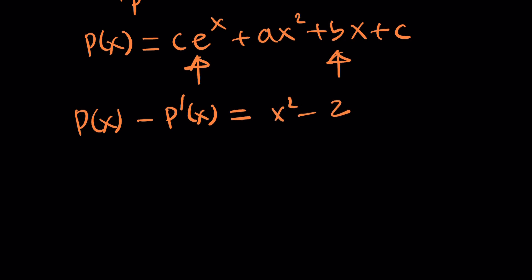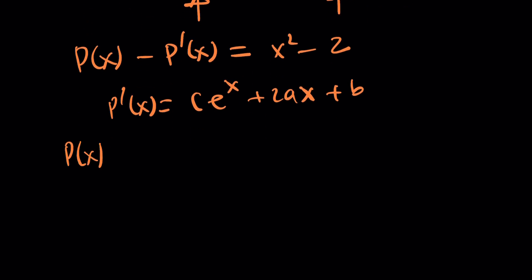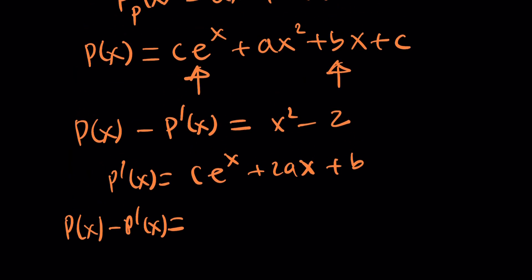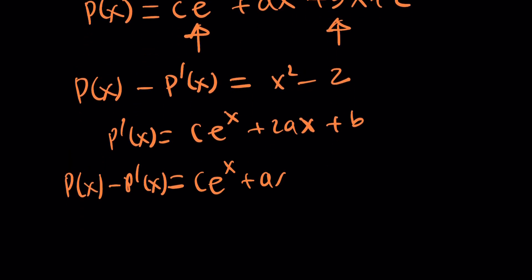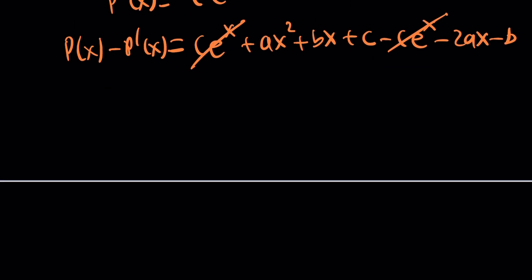Let's check it out. We need this to be satisfied. Differentiate P and you'll get c e to the x plus 2ax plus b. Now subtract P minus P prime. That'll be c e to the x. You see? Something will cancel out. That's what I mean by the homogeneous solution, because the homogeneous solutions will disappear, which is good. These two will disappear and we'll end up with a quadratic. Well, sort of. This is ax squared plus b minus 2a quantity x, and then plus c minus b.